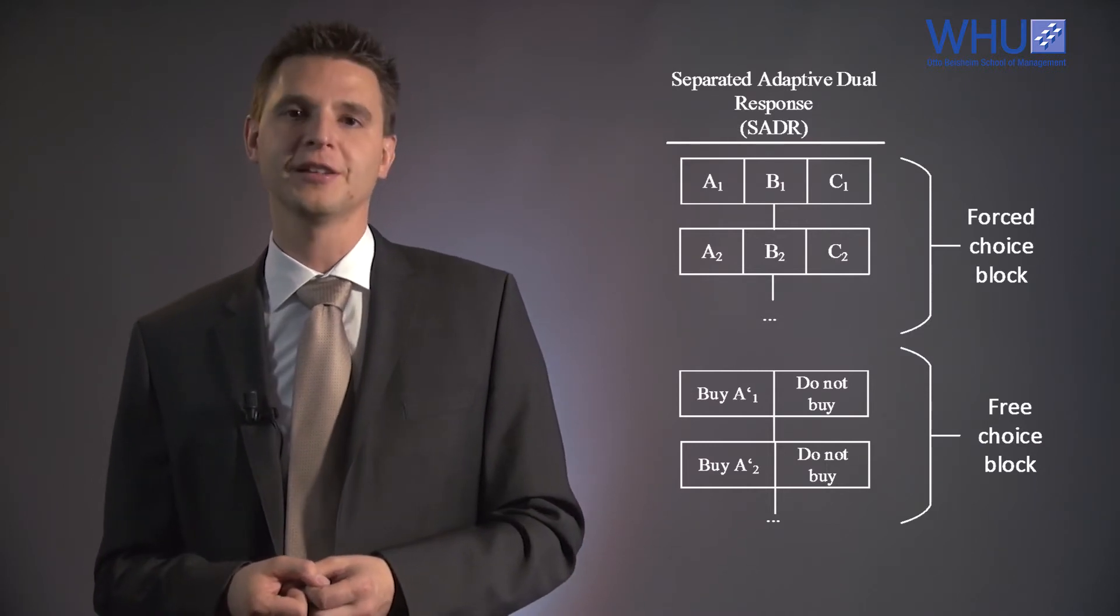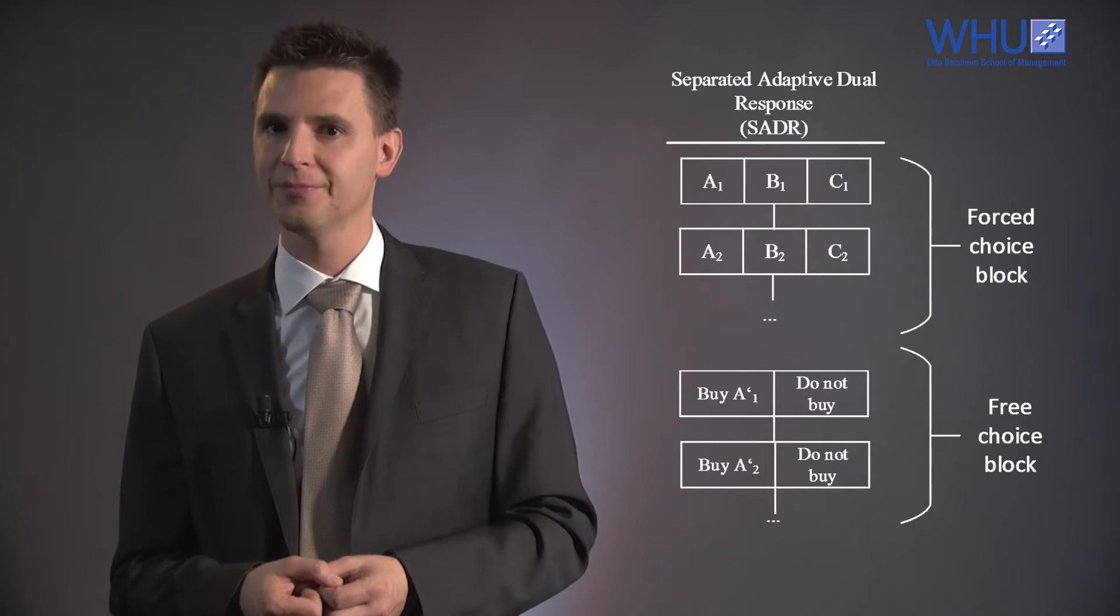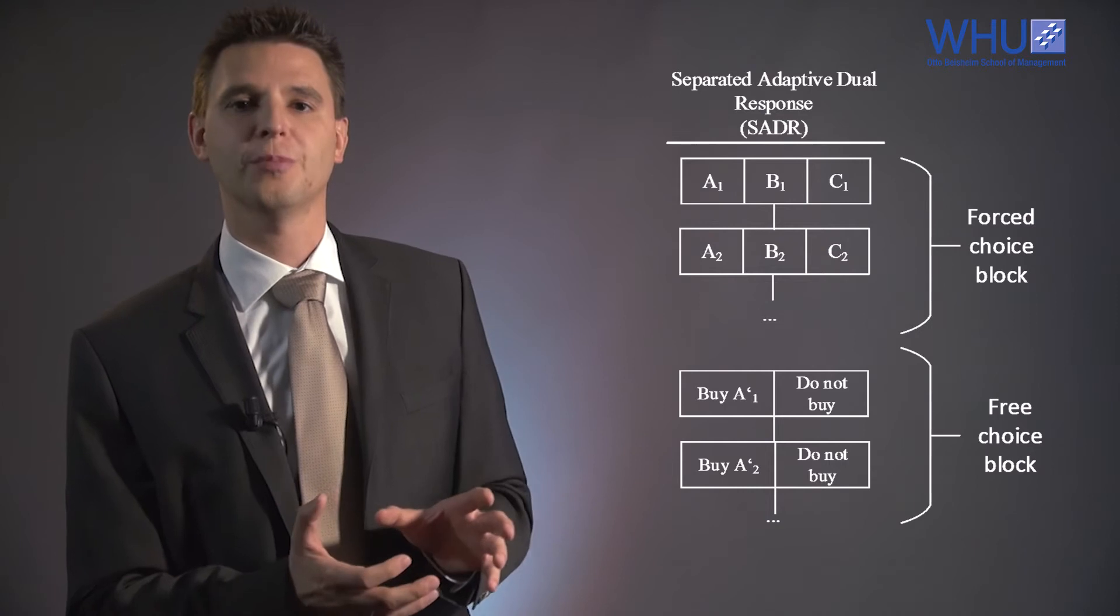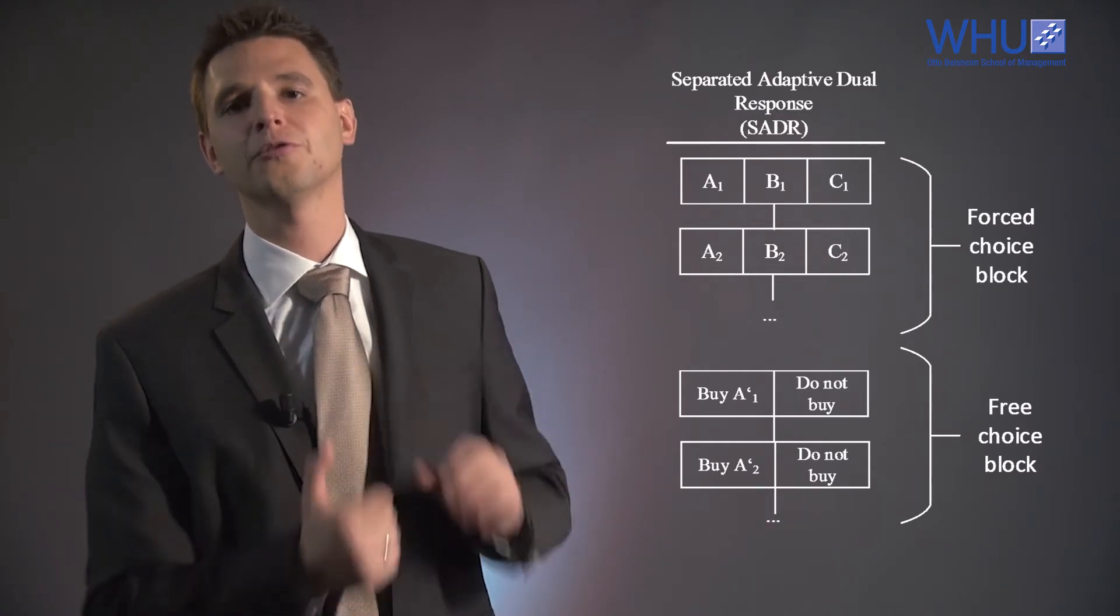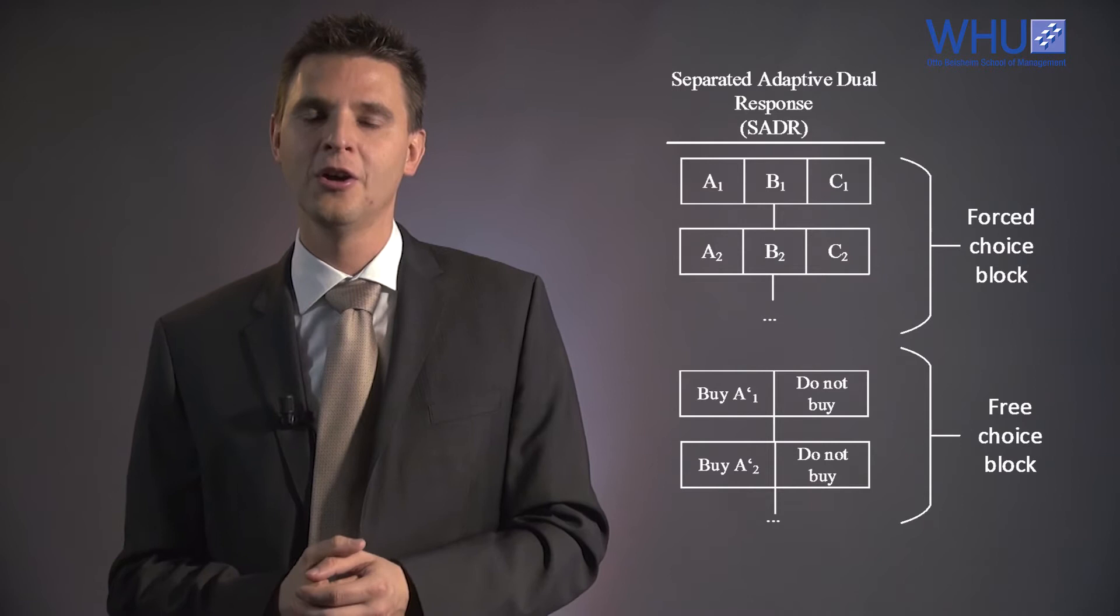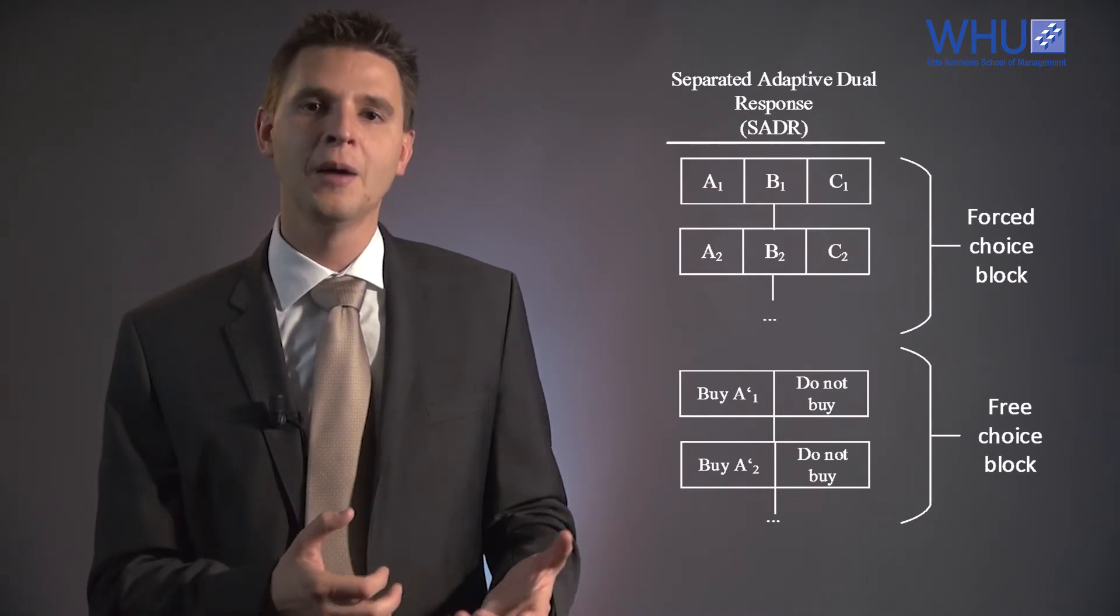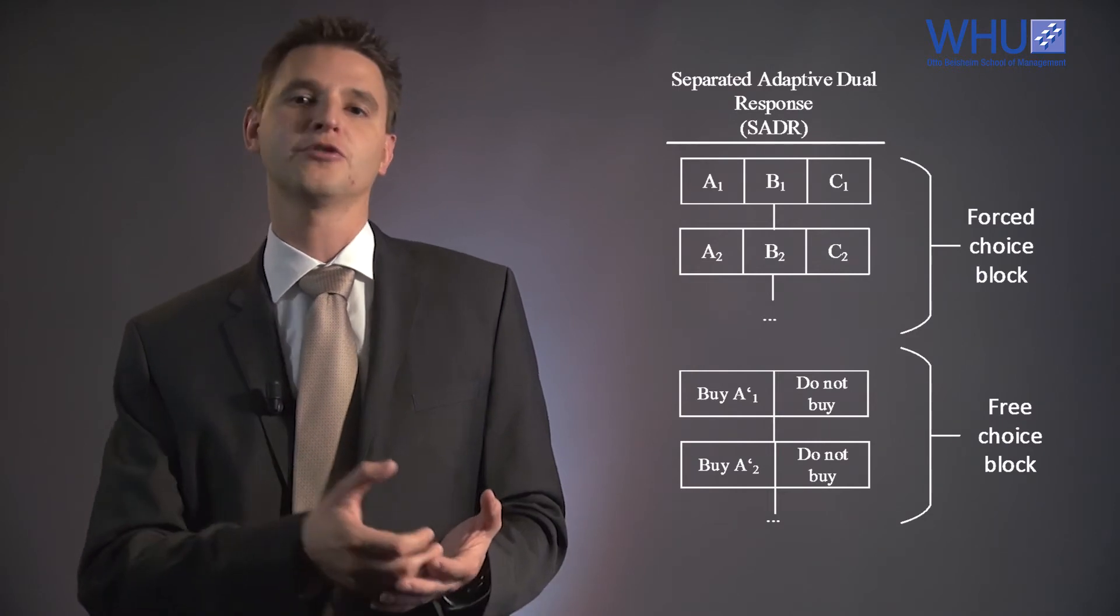The product selection mechanism works as follows. Based on all the decisions in the forced choice block, we already should have learned a lot about respondent's preferences. For example, we should already know the brands that he's interested in, but also how sensitive he reacts to a price change.